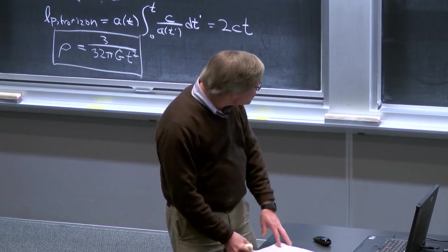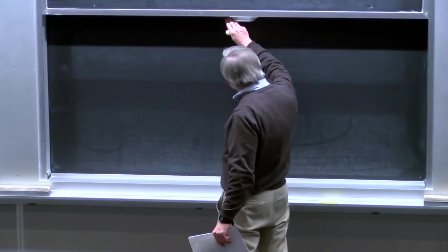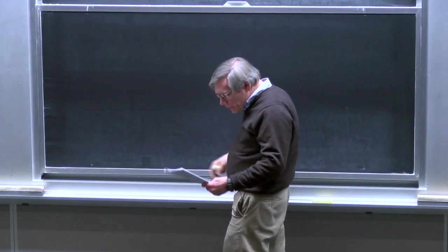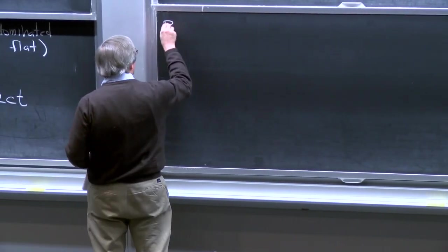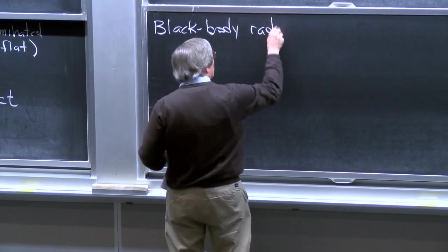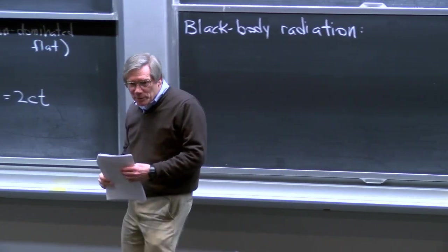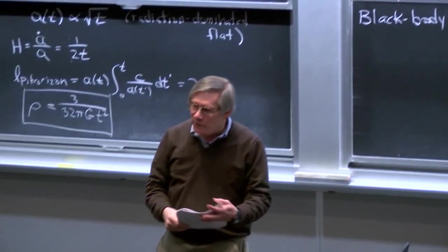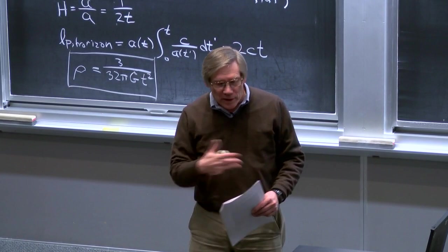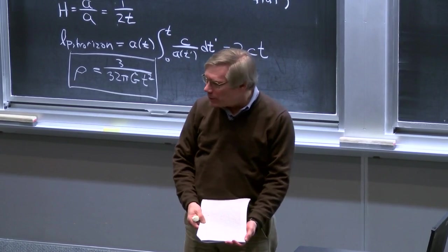Now let's switch gears and go back to talk about some basic underlying physics that we will need, in particular the physics of black body radiation. This is really just a chapter from a statistical mechanics course that we're inserting here because we need it. We won't do it in complete detail, but we'll write down formulas that make sense and give us what we need to proceed.